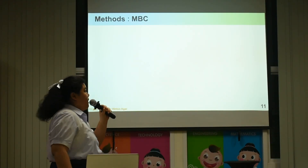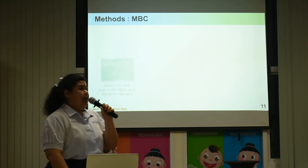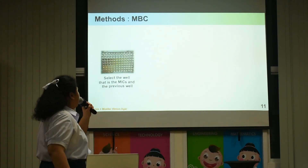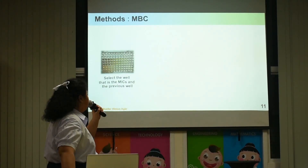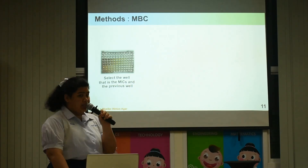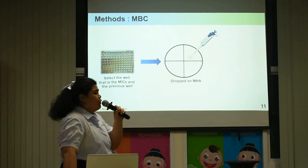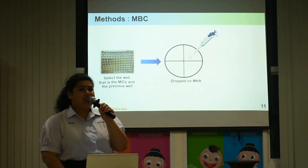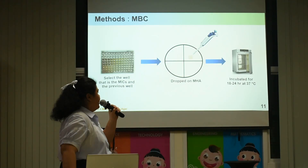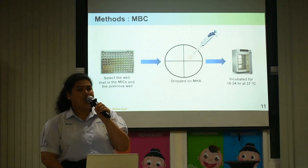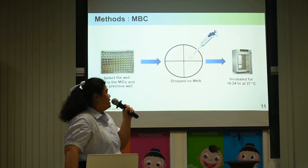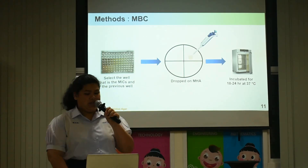The method of MBC: first, select the wells at the MIC value and the previous values, drop onto MHA (Mueller-Hinton Agar), and incubate for 18 to 24 hours at 37 degrees Celsius.